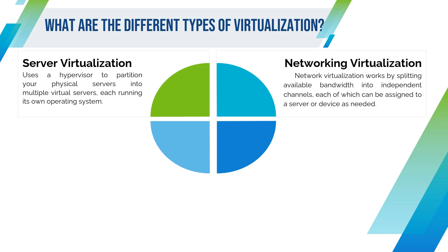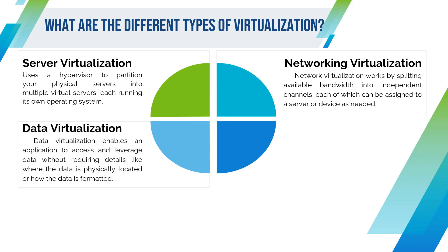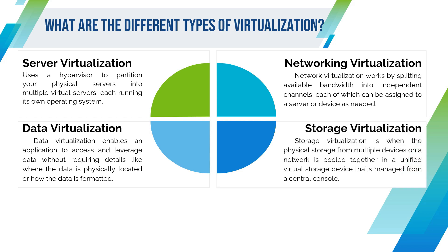Networking virtualization works by splitting available bandwidth into independent channels, each of which can be assigned to a server or device as needed. Data virtualization enables an application to access and leverage data without requiring details like where the data is physically located or how the data is formatted. Storage virtualization is when the physical storage from multiple devices on a network is pooled together into a unified virtual storage device that's managed from a central console.